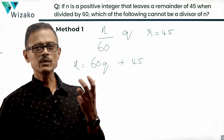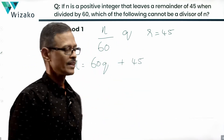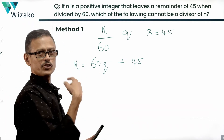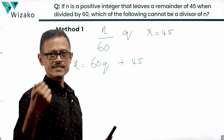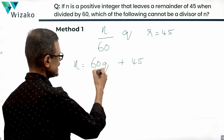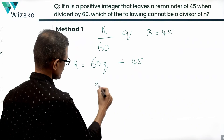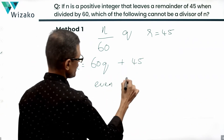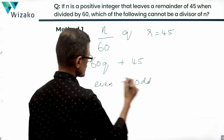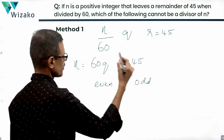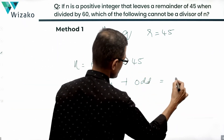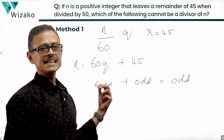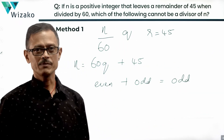Let's look at what kind of number n can be. 60 is an even number, and q is an integer, so an even number into any integer will certainly be even. 45 is an odd number, so the sum of an even number and an odd number will always be an odd number. It's evident that n is an odd number.